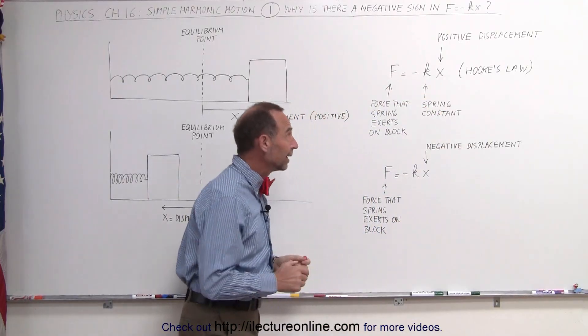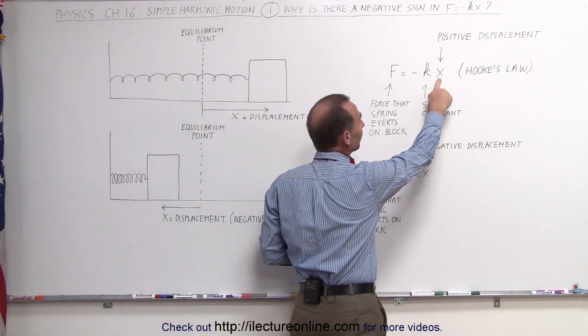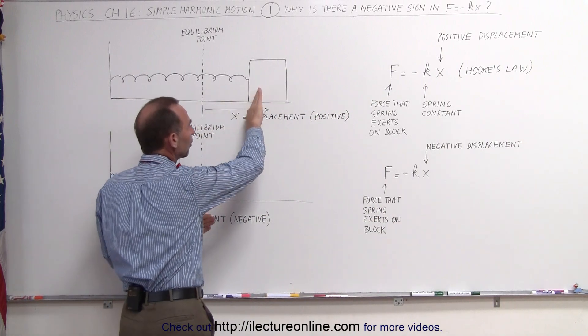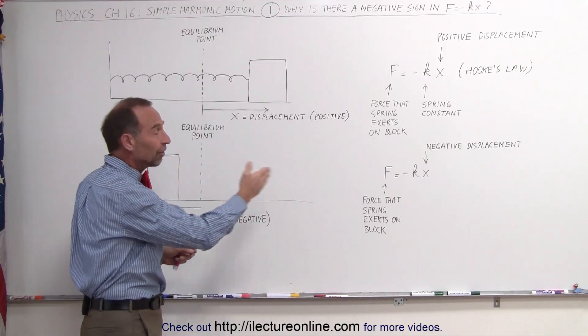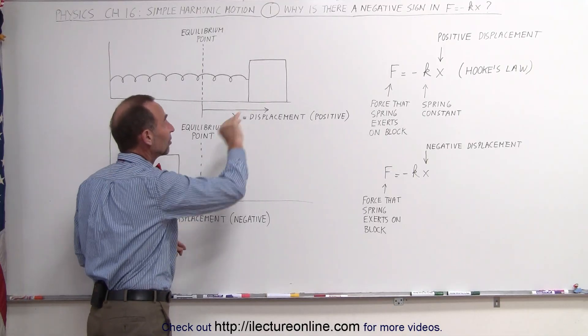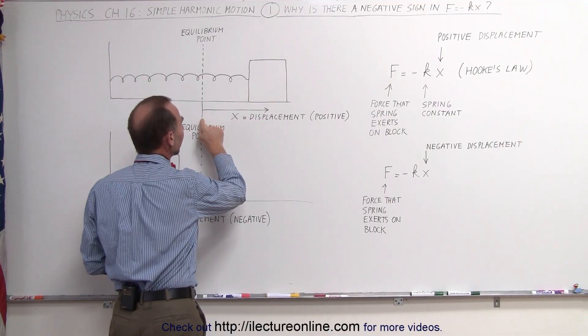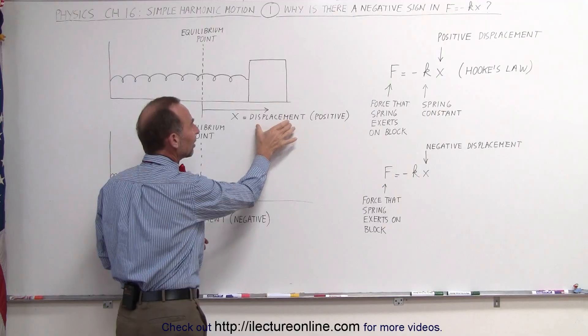Well, it turns out that it's all by definition. First of all, x is the displacement from the equilibrium point. In other words, if the block is being pulled to this direction for whatever reason, maybe we pulled it out that way, maybe it has enough kinetic energy to move it past the equilibrium point, now we can see that the displacement of the block is a positive x direction. So the displacement in this case is positive.